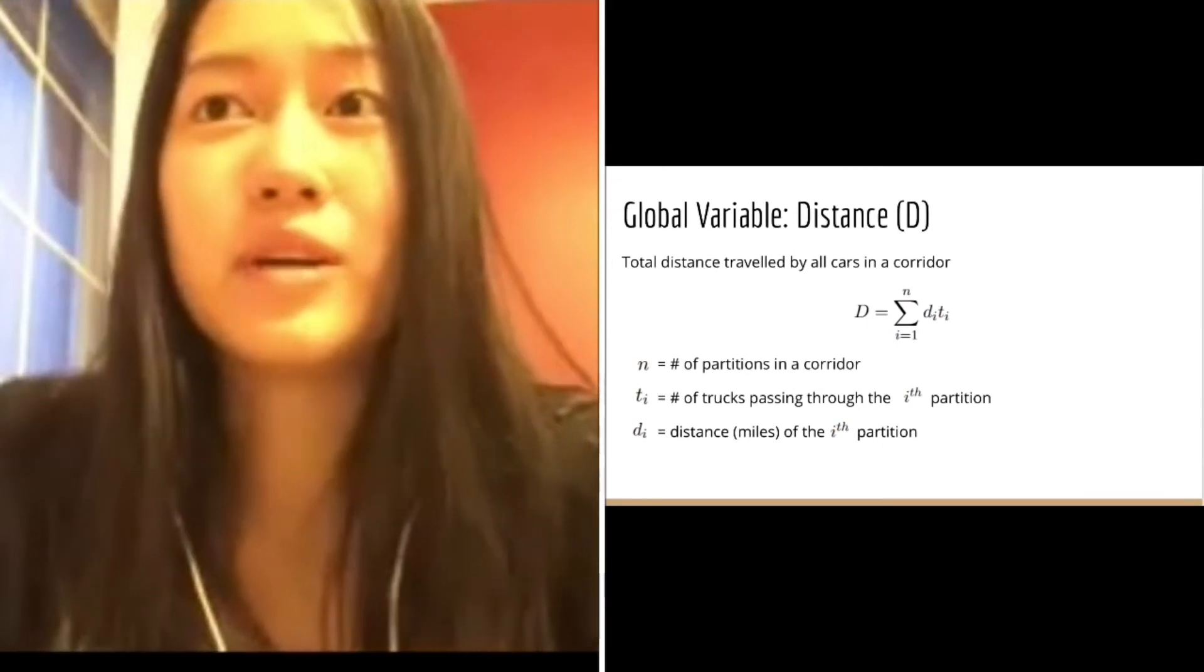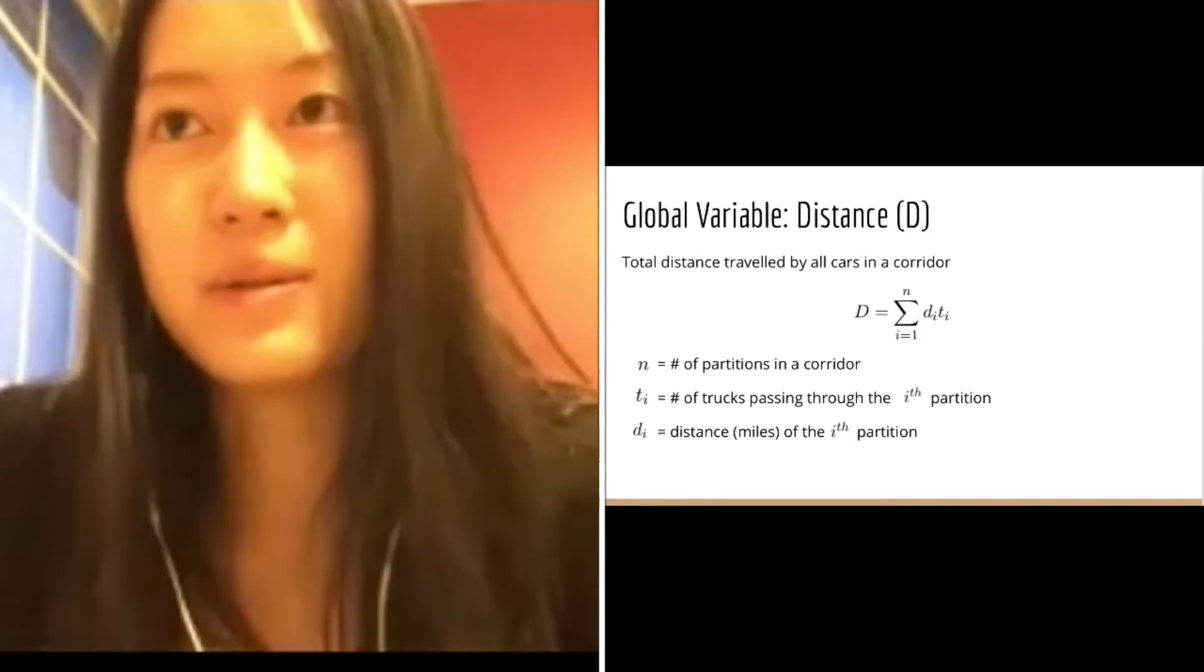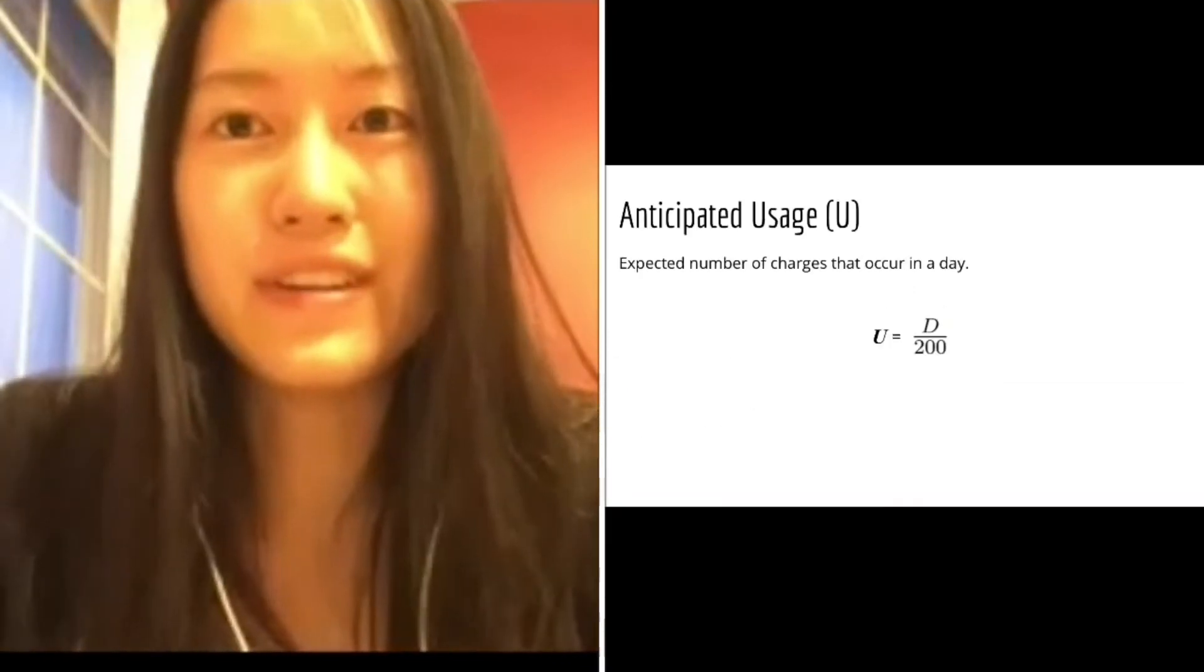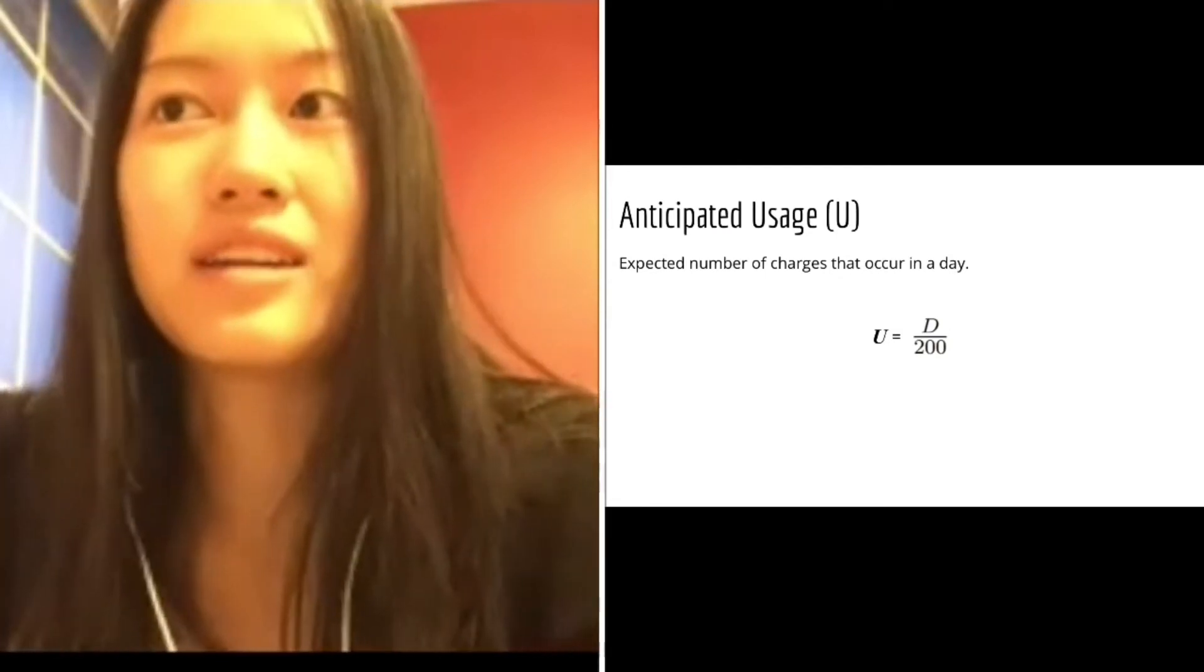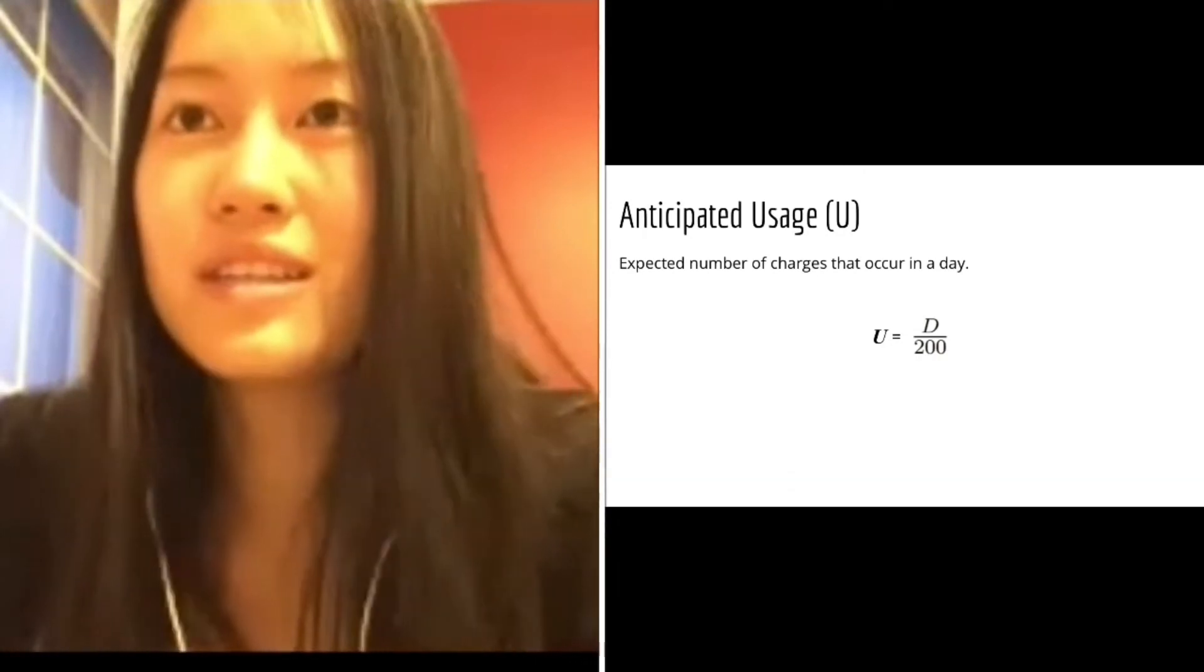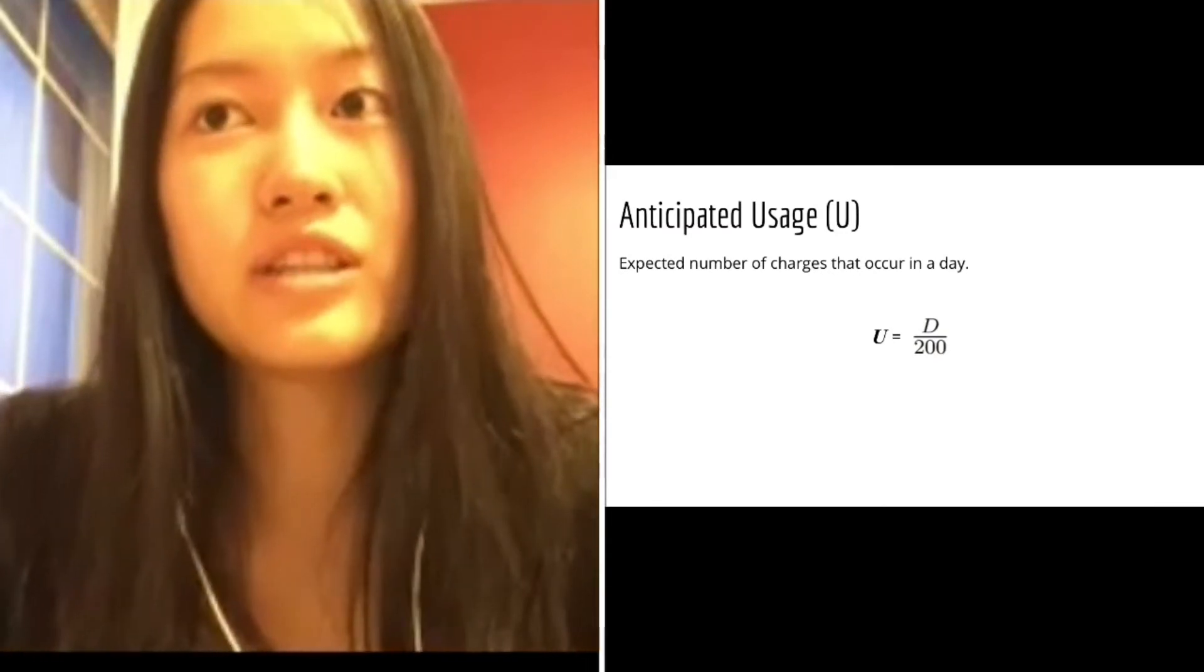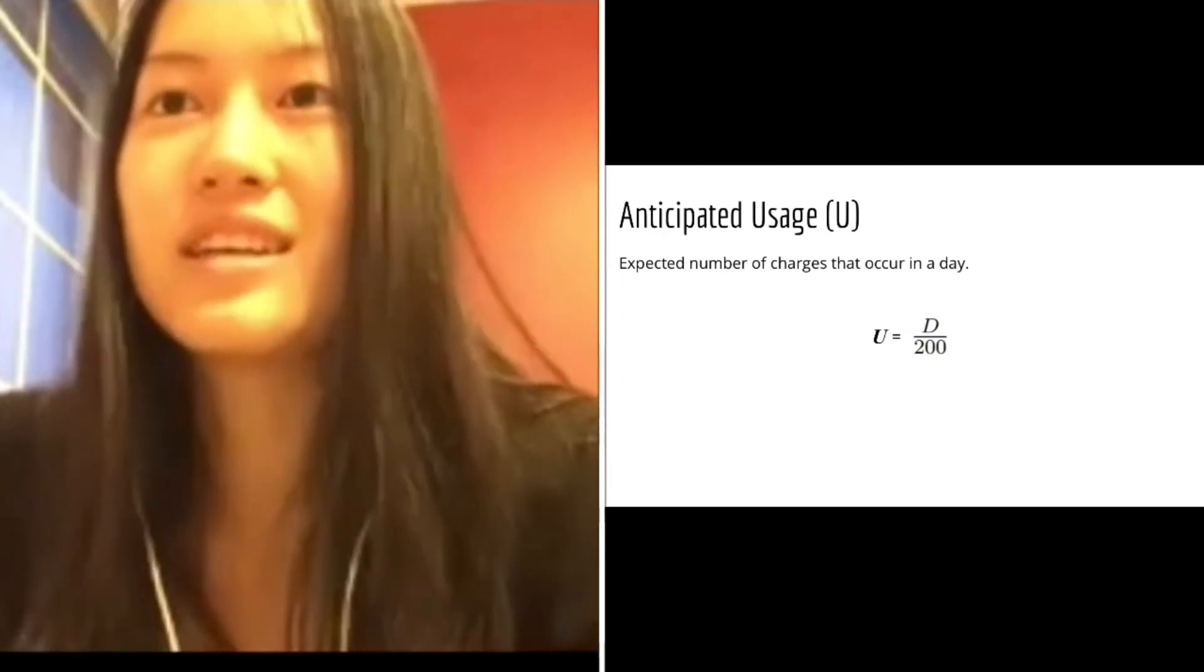Given data on partitions of a corridor, we took the product of a partition's distance and the number of trucks that passed through it to determine the total distance traveled by all cars in each partition, and summed the corridor's partitions together to find the total distance for each corridor. Anticipated usage, defined as the expected amount of charges that occur daily, was chosen because the more electric trucking that will be used in the corridor, the greater the incentive to implement electric trucking as soon as possible. Since a long-haul truck could travel 200 miles per full charge, the total miles traveled daily over 200 yields the expected number of charges daily.